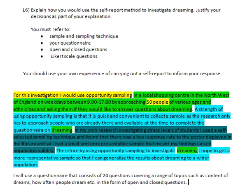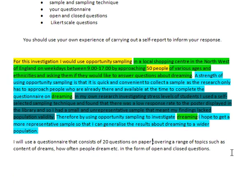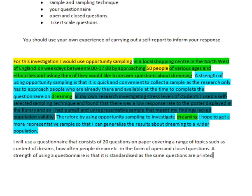That's got context in it — you've said what you're actually going to do. You might also want to say 'on paper' just to make it very clear. Then you need to say a strength of the questionnaire. Whenever you're doing strengths of something, you always compare it to the other thing. A questionnaire is a research method, so you can compare it to an interview or another research method. A strength of using a questionnaire is that it is standardized, as the same questions are printed in the same order each time.